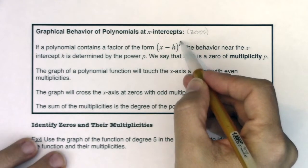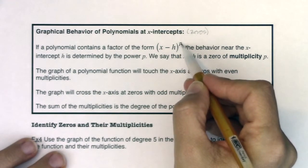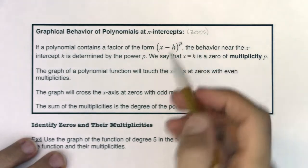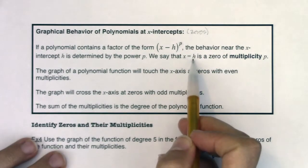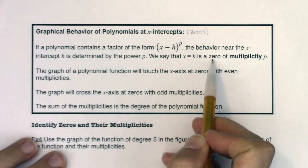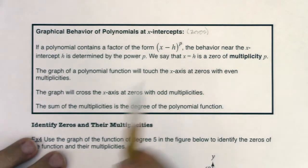We know some information based on whether this power is even or odd. We say that x equals h is a zero, an x-intercept of multiplicity p.